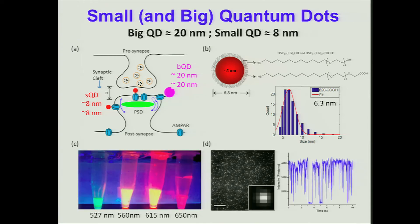We've made quantum dots at 527, 560, 615, and 650 nanometers emission, et cetera. You can put them on a cover slip with biotin-avidin, and you can see individual ones and localize them to about a nanometer. And in fact, the individual ones blink — sometimes they're on, sometimes they're off.